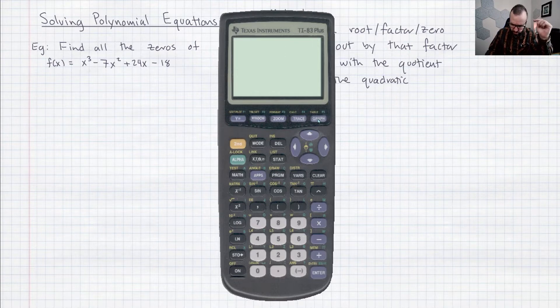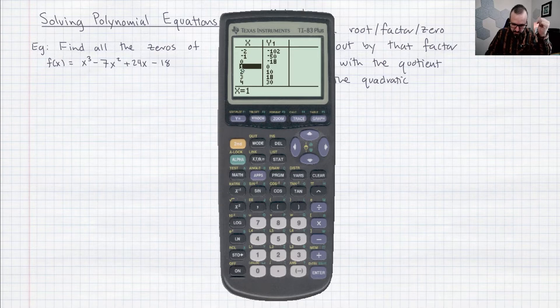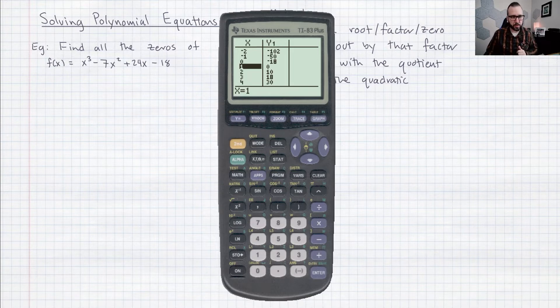So if you push second graph that's going to open up the table and it's just going to show you a list of x values and what y values you get if you plug in those x values and actually you can see right here does confirm that if x is equal to one y is zero. So now we've already got one of our zeros so let's divide out by that factor so that we can find the other ones.